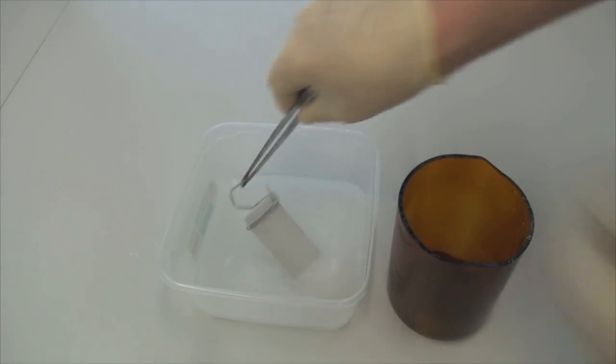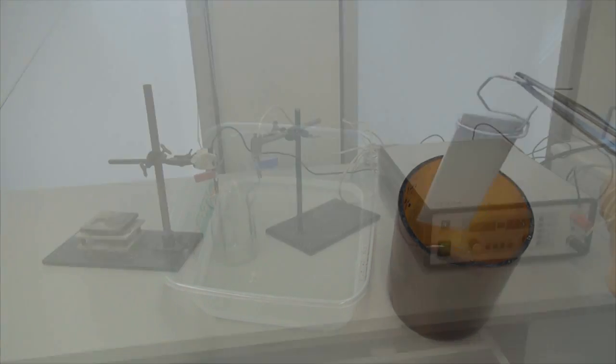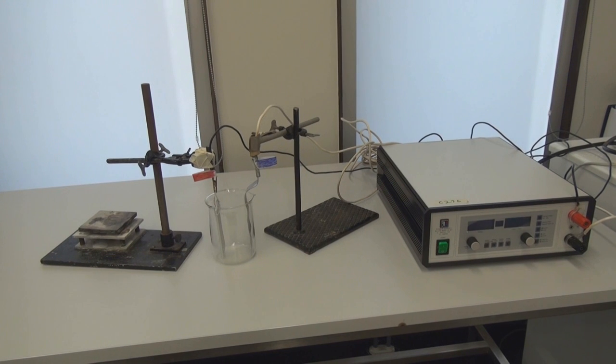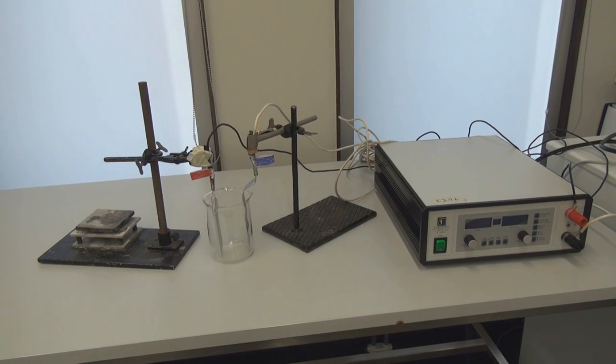After removing the natural oxide layer, we rinse the plate with deionized water and set up the anodizing system. In this two electrode setup, our aluminum plate is the anode and will be anodized.